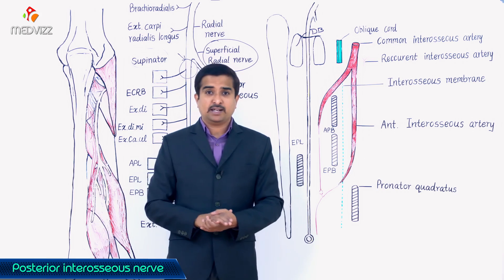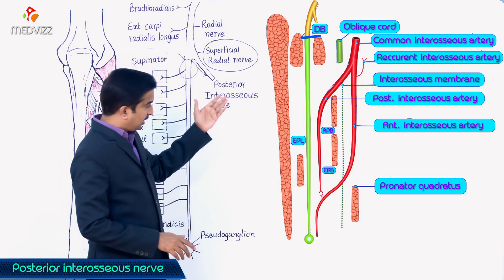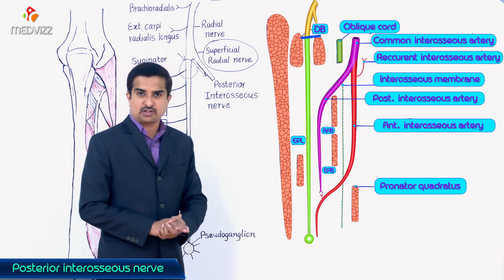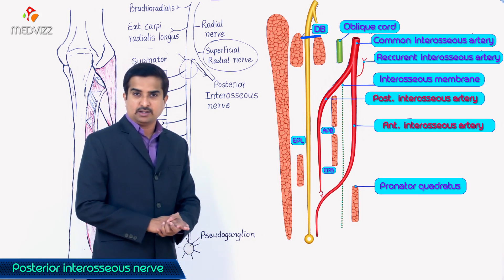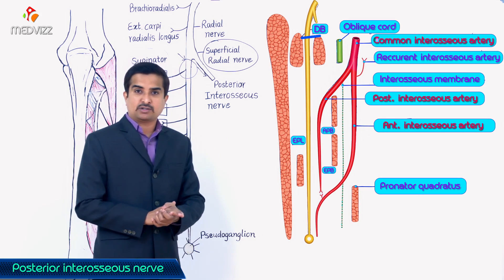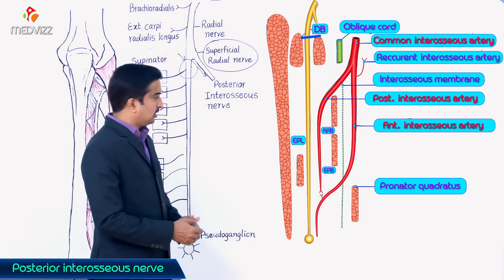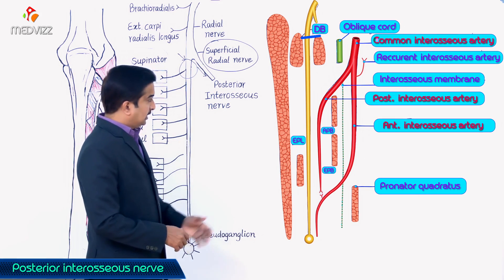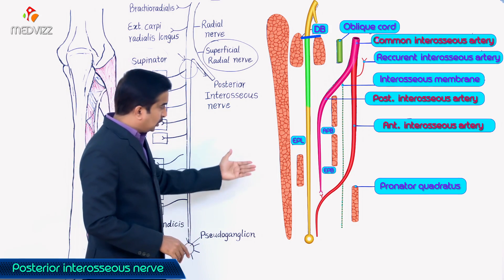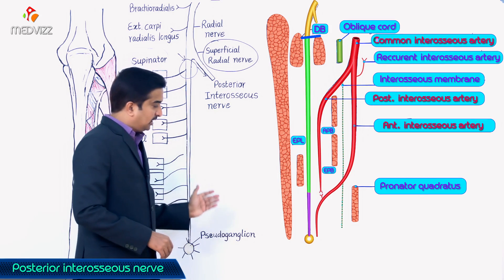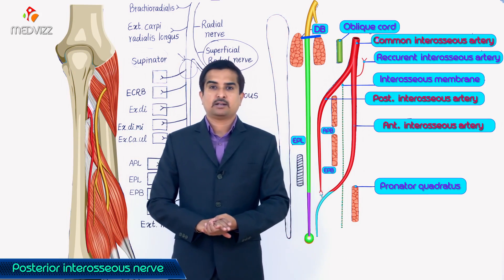Regarding the vascular relationships, as seen clearly in this picture, the posterior interosseous nerve is related to the posterior interosseous artery for the majority of its course. There are two interosseous arteries — the anterior interosseous artery and the posterior interosseous artery — both arising from the common interosseous artery, which in turn arises from the ulnar artery. In the proximal two-thirds of the forearm, the posterior interosseous nerve is related to the posterior interosseous artery, but in the distal one-third, it is related to the anterior interosseous artery.